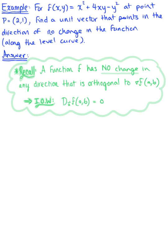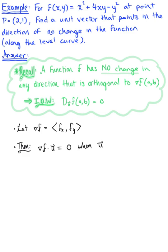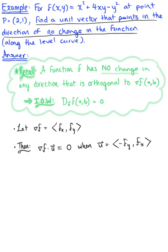So how can we find such a vector? If we let the gradient vector be defined by components — the partial derivative of the function with respect to x, and the partial derivative with respect to y — then we can conclude that the dot product of the gradient vector with some vector u equals 0 when vector u has components: negative the partial derivative with respect to y, and the partial derivative with respect to x. We'll use this conclusion to find a unit vector pointing in the direction of no change along the level curve.